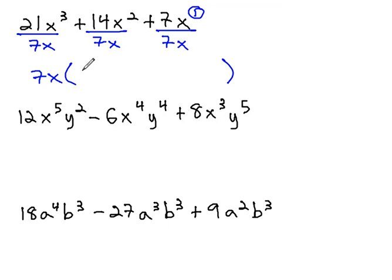21x³ over 7x reduces to 3x², plus 14x² over 7x is 2x, plus 7x divided by 7x is 1.